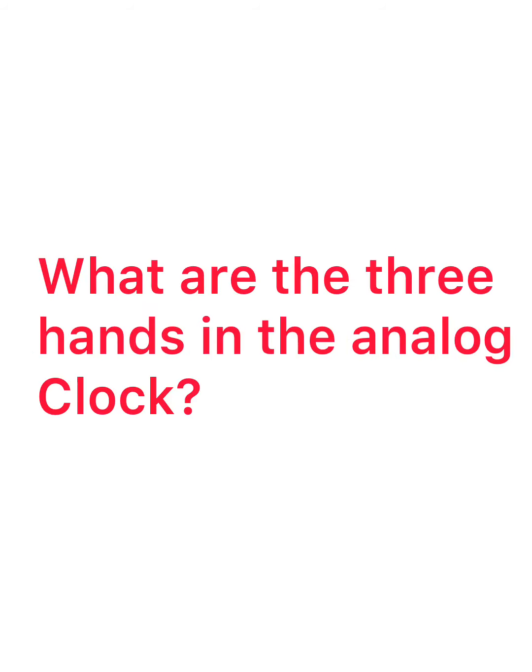Students, what is an analog clock? An analog clock is a normal clock used in our home. What are the three types of hands in the analog clock? Hours hand, minutes hand, and seconds hand. Does the analog clock show 12 hours time or 24 hours time? It shows 12 hours time.